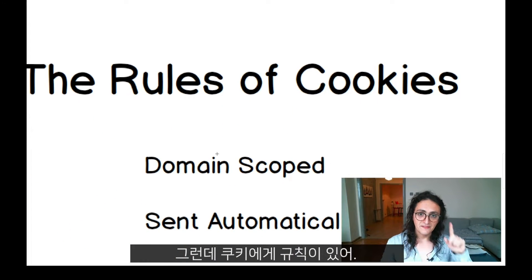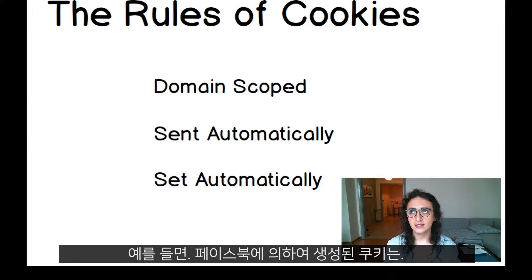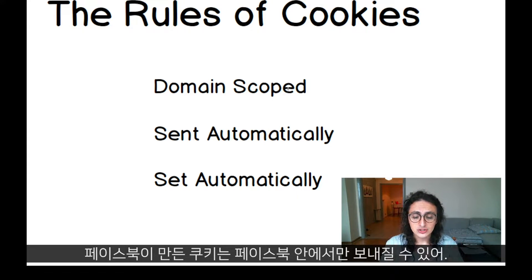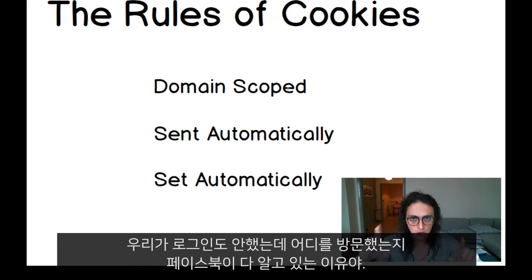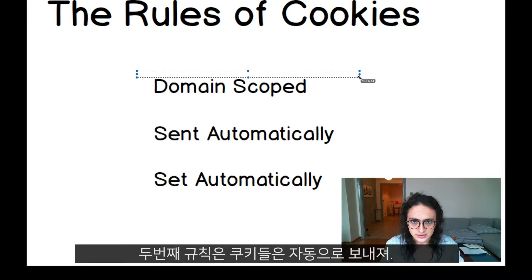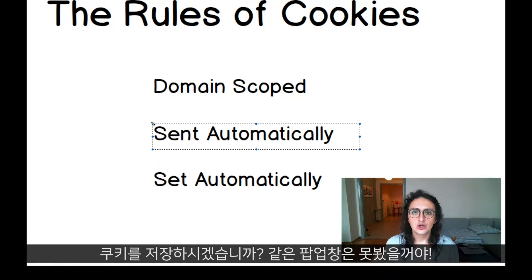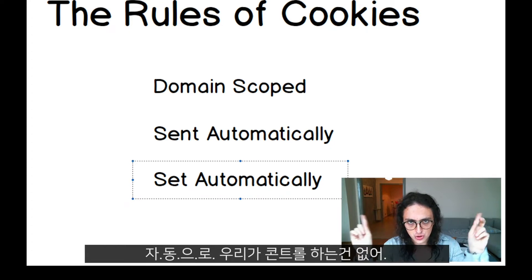Now cookies have some rules. The first rule is that their domain is scoped — they are limited to one domain. A cookie created by Facebook.com will not be sent to Netflix.com. Cookies are limited to their domain, so a cookie created by Facebook will only be sent to Facebook. Neighbor.com cannot read cookies from Netflix.com. The second rule is that cookies are sent automatically. The server can send you as many cookies as it wants and your browser will save them automatically — you'll never get a pop-up asking to allow or disallow. It just happens automatically whether you want it to or not. They are set automatically. You don't control this.